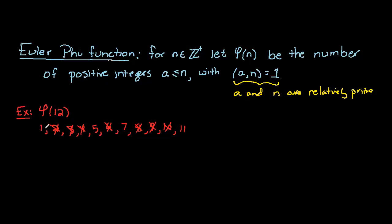And so if we count these up we have 1, 2, 3, and 4. This suggests that phi of 12 is 4.